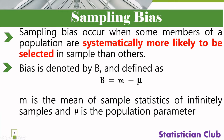Sampling bias occurs when some members of a population are systematically more likely to be selected in a sample than others. Bias is denoted by b and its formula is b = m minus mu, where m represents the mean of sample statistics of infinitely many samples — the mean of a large group of samples — and mu is the population parameter. We find bias by the difference of the mean of a large group of samples minus the population parameter.